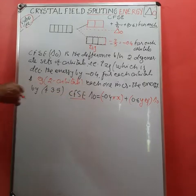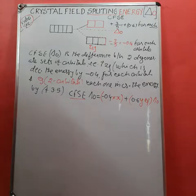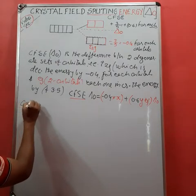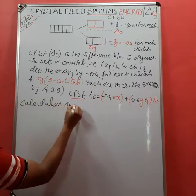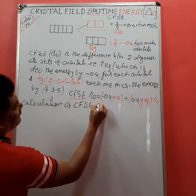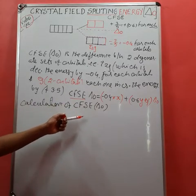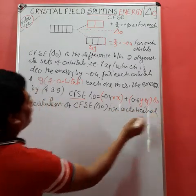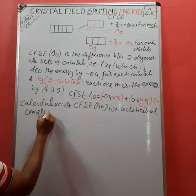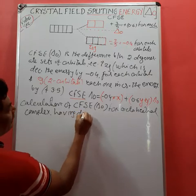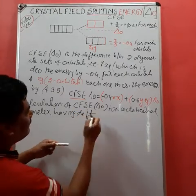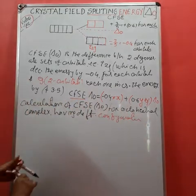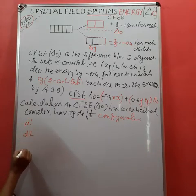Now we will calculate the CFSE, that is delta-oh, for octahedral complexes having different electron configurations. We will consider configurations such as d1, d2, and d3, and determine how to fill electrons in the different orbitals for each case.